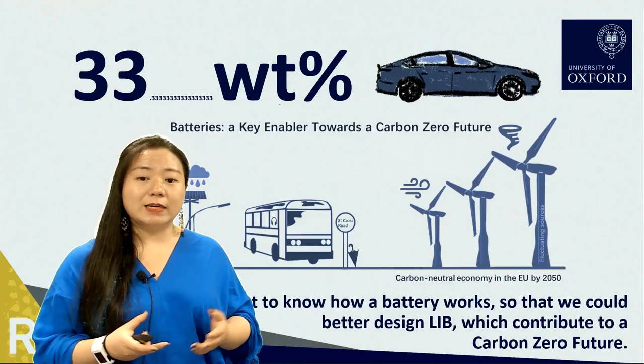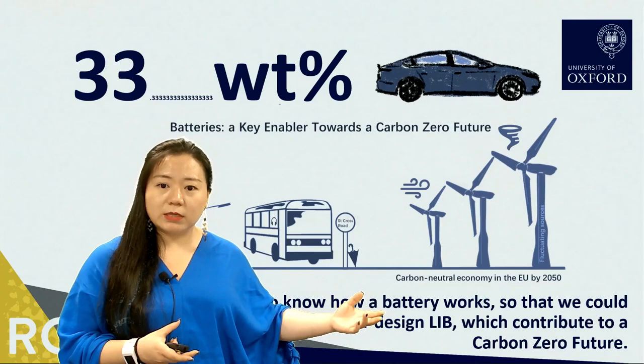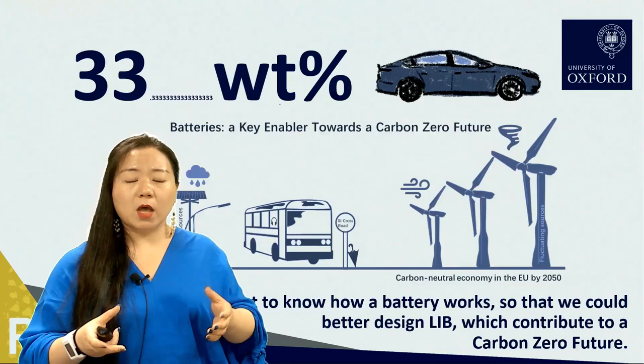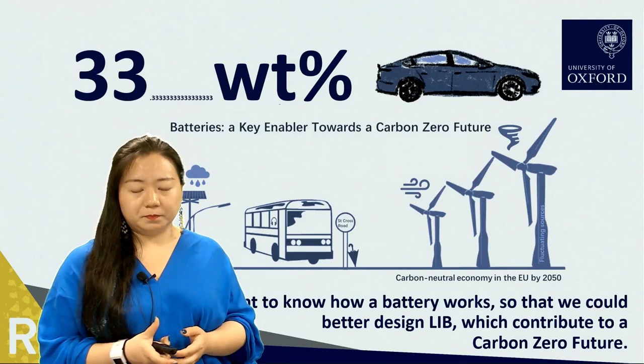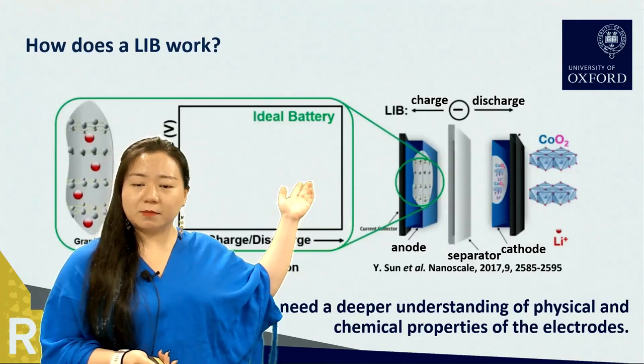Therefore it is necessary to investigate and understand how the battery works, how the chemistry distributes — especially the lithium ion distribution. Based on this information, we are able to design the battery wisely so that we can decrease the mass of the battery without sacrificing energy storage and lifespan. So now let's start from the first question: how does the lithium ion battery work?